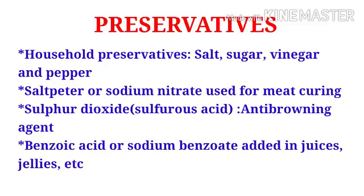Salt, peat, or sodium nitrate is used for meat curing. Sulphur dioxide or sulphurous acid is an anti-browning agent. Benzoic acid or sodium benzoate is added in juices, jellies, etc. Sulphur dioxide has been used in foods for a long time as a general preservative.